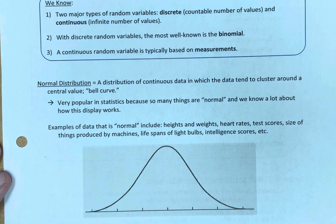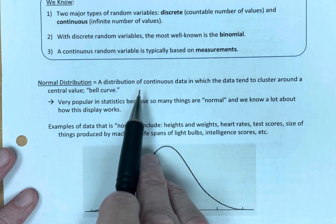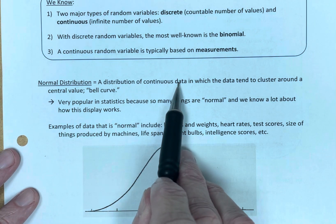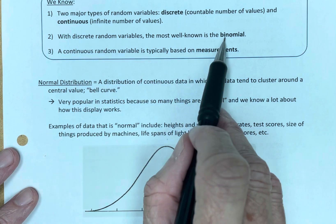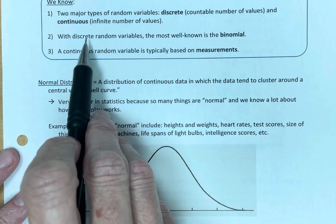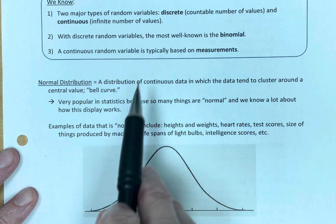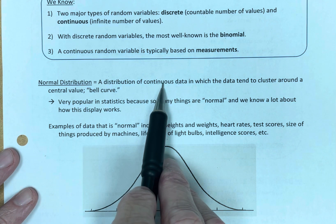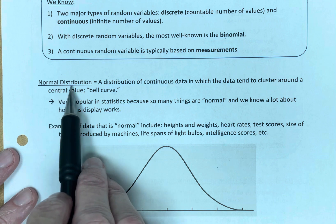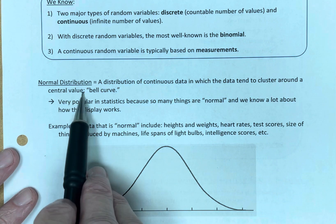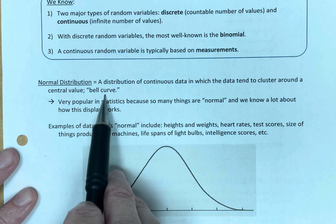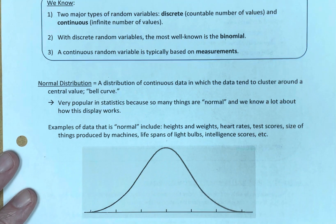So what is a normal distribution? A distribution of continuous data. Again, up here, we dealt with binomials, and that was discrete data. We're now going to deal with continuous data, and that will be a normal distribution, in which the data tend to cluster around a central value of bell curve. And we've seen bell curves numerous times.